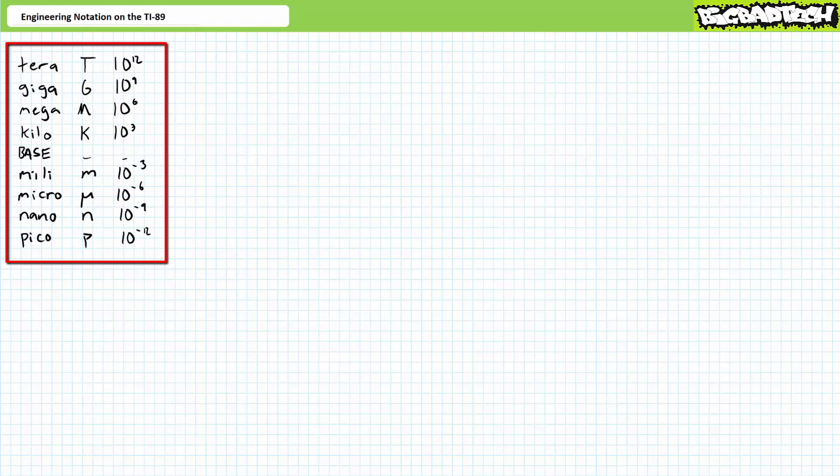The next larger prefix is the giga, abbreviated capital G, equivalent to 10 to the ninth or one billion. Finally, the next larger prefix is the terra, abbreviated capital T, equivalent to 10 to the 12th or one trillion.